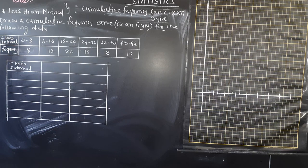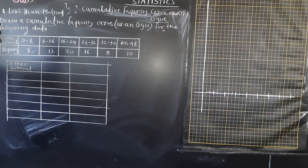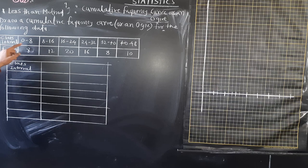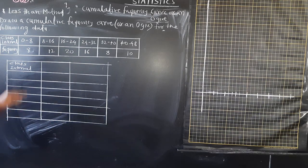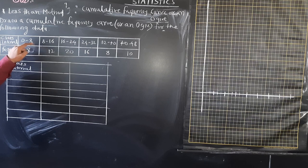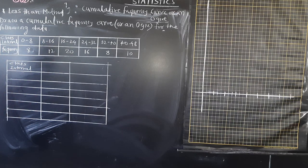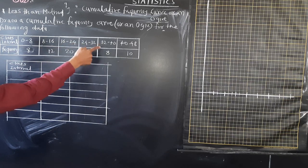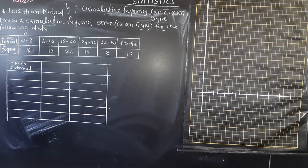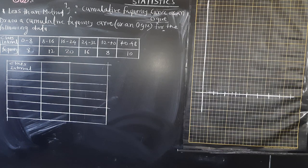Here one question is given: draw a cumulative frequency curve or ogive for the following data. The class intervals given are 0 to 8, 8 to 16, 16 to 24, 24 to 32, 32 to 40, and 40 to 48. If you observe, class intervals are same - 8 minus 0 is 8, 16 minus 8 is 8 - class size is equal. Also, class intervals are continuous. So it is exclusive and no changes are necessary in the class intervals.